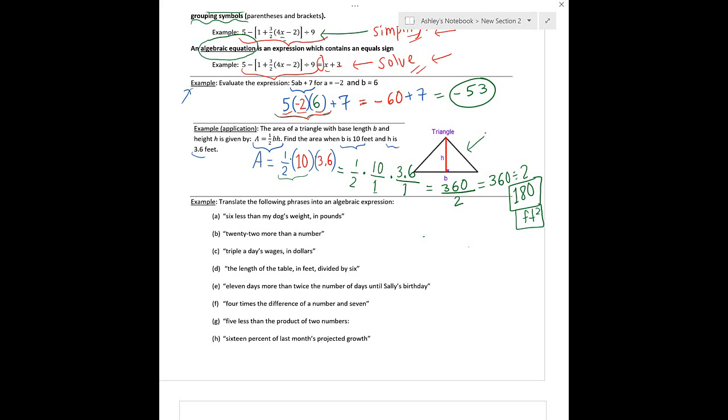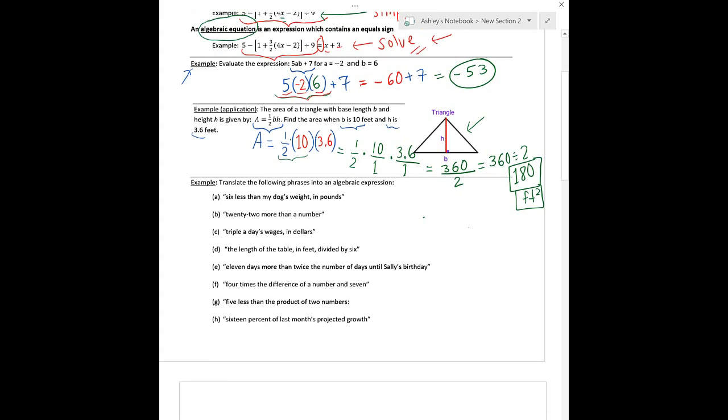The next example is probably good to work on because a lot of people have a tough time translating words into math — if they give you a verbal expression, can you write it as a mathematical expression? Or if they give you a verbal equation, can you rewrite it as a mathematical equation? The main thing to keep in mind is to give a variable to what you don't know. Usually in math we use x because it's traditional, so I'm going to let x be the unknown value.